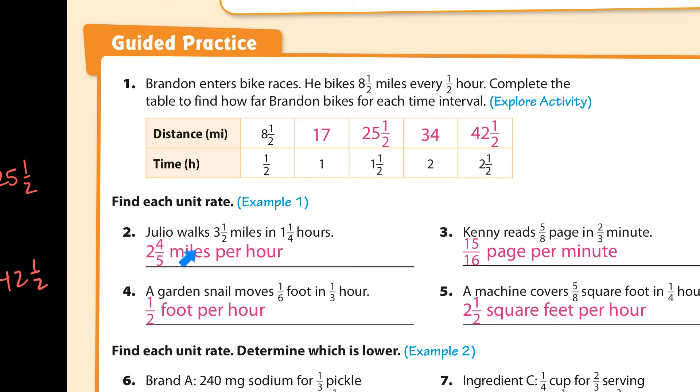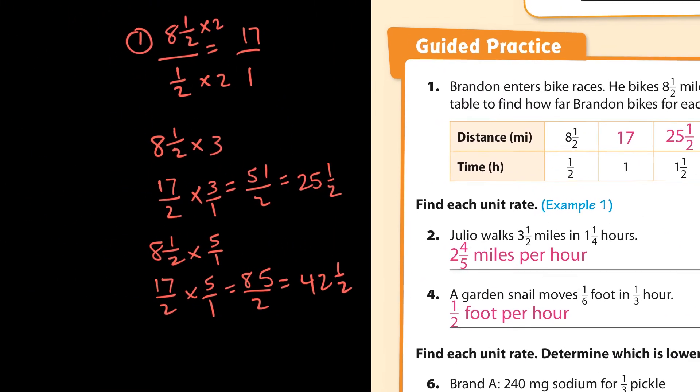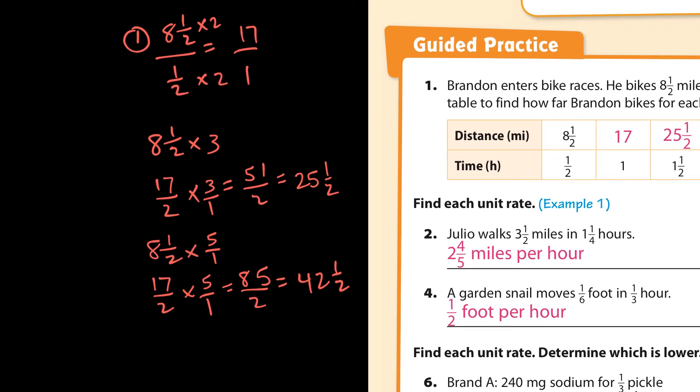Okay, on to number 2. Find the unit rate. If he walks 3 and a half miles in 1 and a quarter hours, that'd be 3 and a half divided by 1 and 1 fourth. And I'll show you what that looks like.